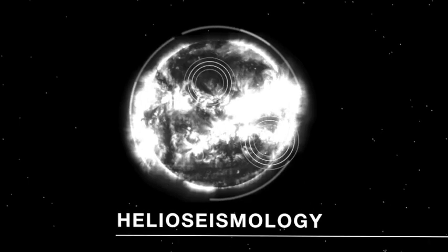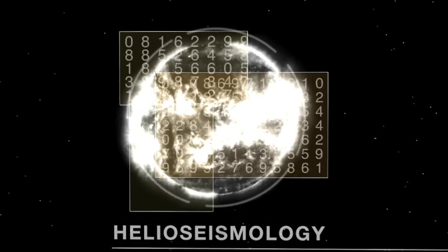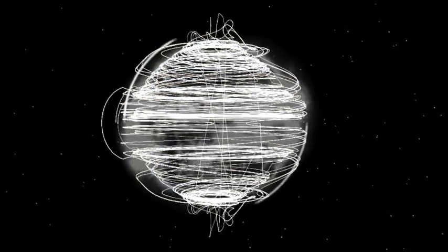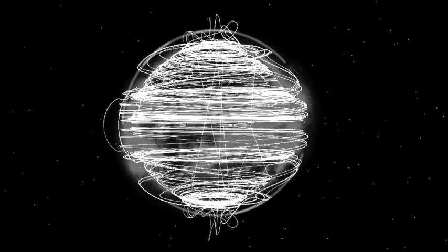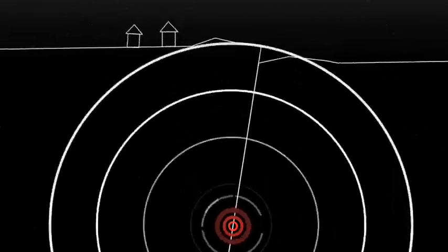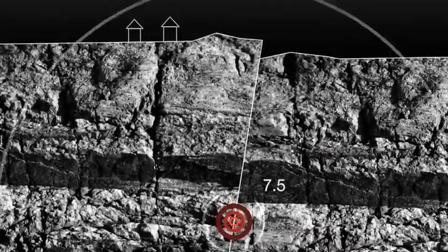The helioseismic refers to the sound waves that we can measure at the surface of the Sun. When we carefully analyze them, we can look inside the Sun and see what's happening under the surface, and even what's happening on the other side of the Sun. It's much like how we use the waves from earthquakes to know where the earthquake happened, how big it was, to learn about what's inside the Earth.